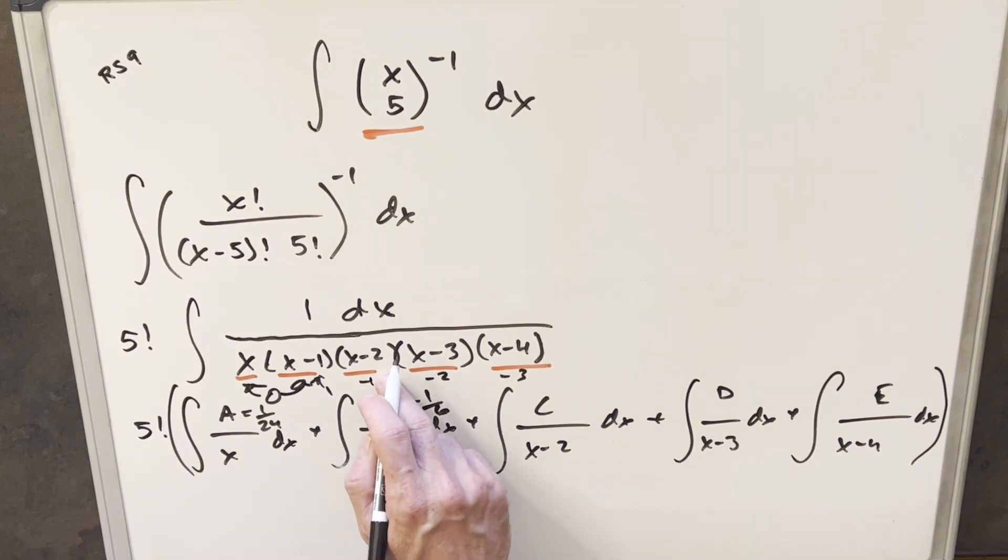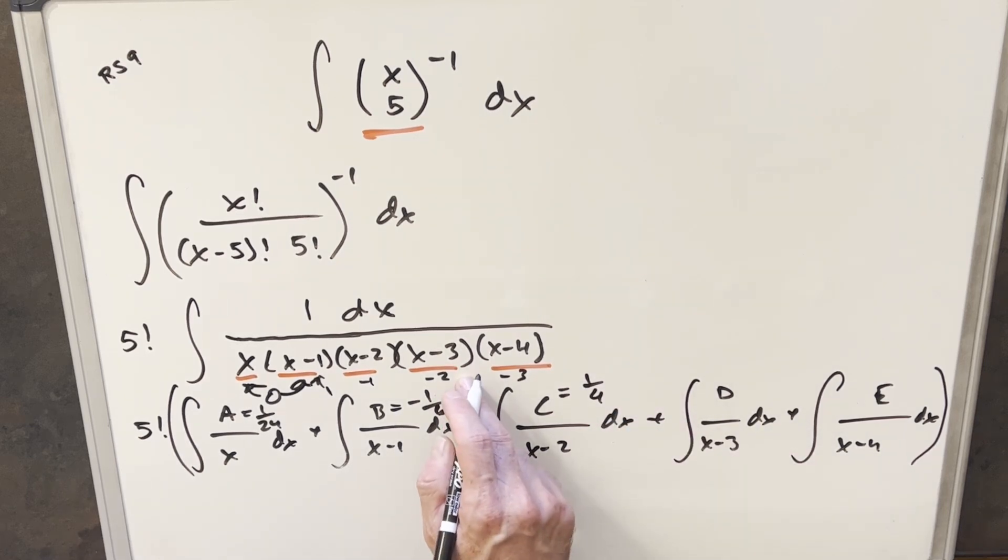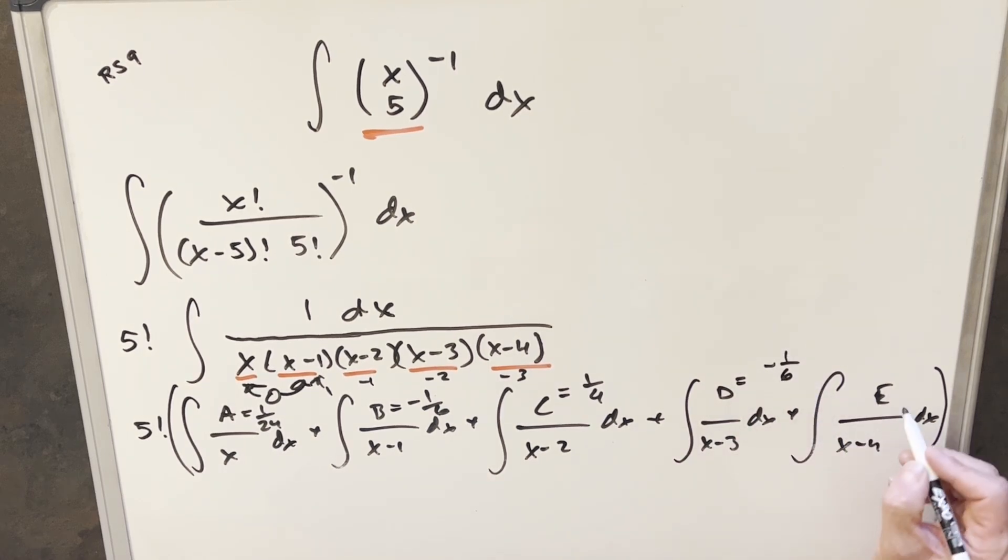Doing the same thing, plugging a 2 in for x minus 2, we're going to end up here. This is going to become a 1 over 4. Plugging a 3 in for x minus 3, I'm plugging a 3 into all the terms. Our d value will be minus 1 over 6. And our e value will be 1 over 24.